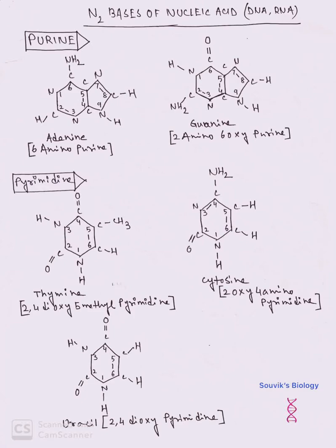Hello friends, welcome to my channel. I am Shovik De from Shovik's Biology. Today I will discuss the basic structures of nitrogen bases which are present in nucleic acids DNA and RNA. Adenine and guanine are the bases which are present in DNA and RNA as purines, and thymine and cytosine are present in DNA as pyrimidines. Uracil and cytosine are present as pyrimidines in RNA.